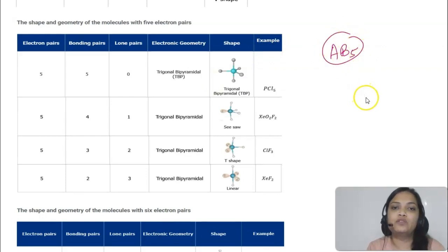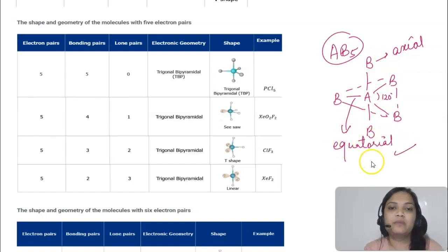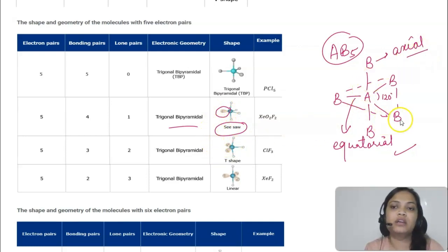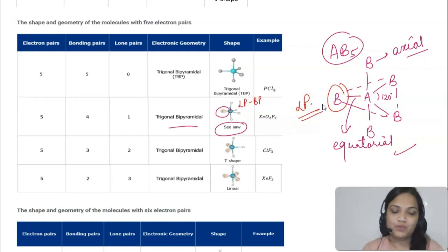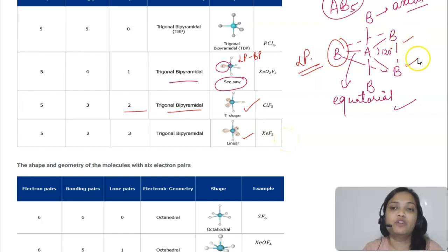With five electron pairs, the geometry is trigonal bipyramidal (AB5 with no lone pair). The three equatorial bonds lie in a plane at 120 degrees, while two axial bonds are perpendicular to the plane at 90 degrees. If there is one lone pair, it occupies an equatorial position — since axial position would cause more lone pair–bond pair repulsion — giving a seesaw shape. With two lone pairs the shape is T-shaped, and with three lone pairs it is linear.